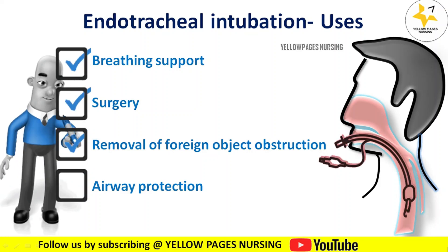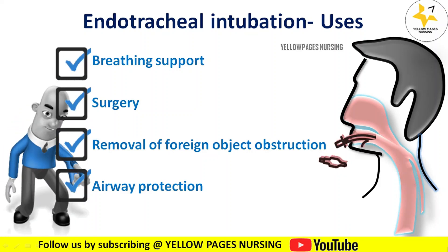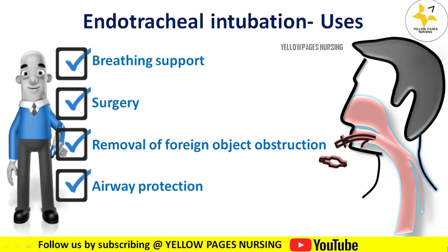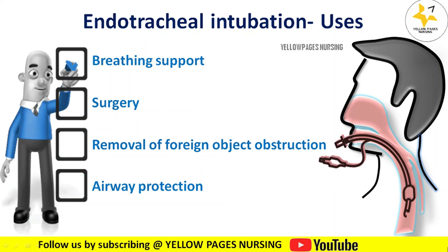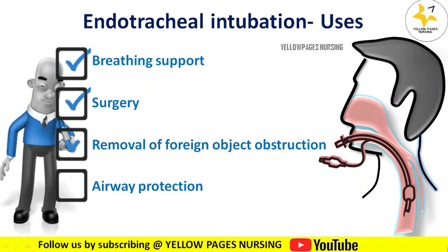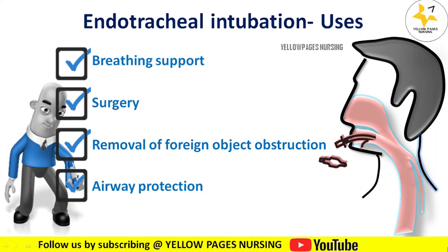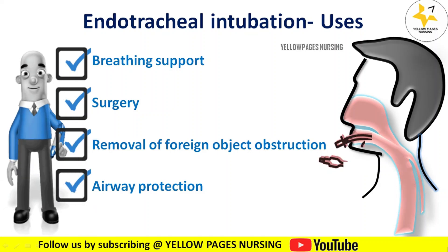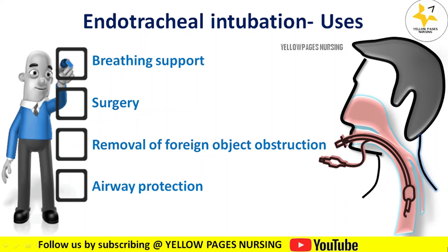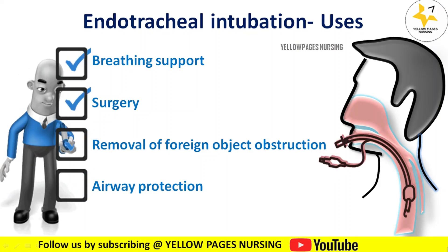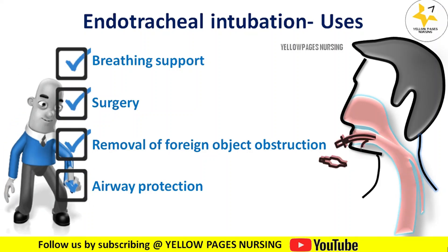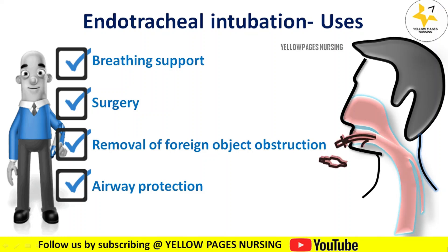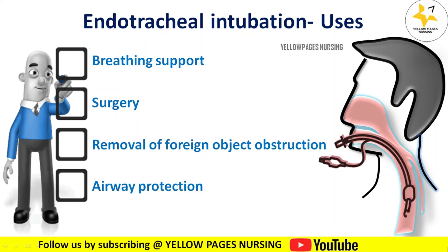Next is foreign object obstruction — endotracheal intubation can help remove a foreign object lodged in the area. Next comes airway protection — an endotracheal tube prevents aspiration of stomach contents into the lungs during a massive gastrointestinal bleeding.